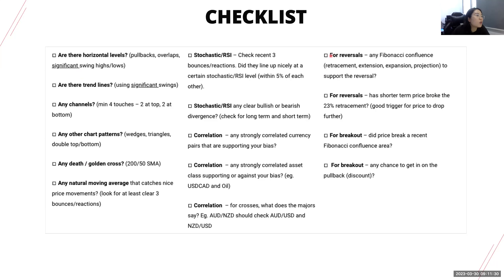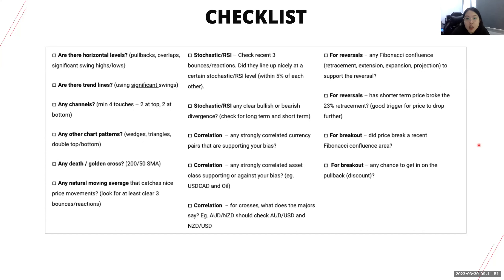Then we look for reversals. After spotting support, resistance, and all the key levels, we see whether price is going to reverse or break out at those levels. This is basically the checklist — the cheat sheet — that we use. I'm going to stay here for one minute so you guys can take a picture or note down this information.